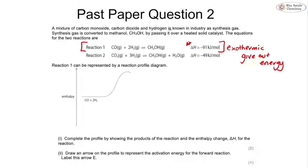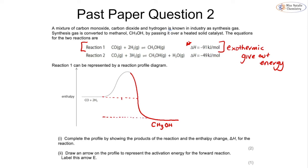Part one asks us to complete the profile by showing the products of the reaction and then showing the enthalpy change. We extend the curve downward so it comes below where our reactants were, then label CH3OH as our product. The enthalpy change delta H is the difference between these two energy levels.